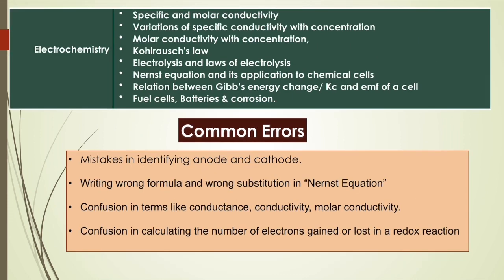In the second chapter, Electrochemistry, these are the important areas. We give more importance to the Nernst equation, numericals of the Nernst equation, Kohlrausch's law, and the relation between Gibbs energy change, equilibrium constant, and EMF. Those areas need to be given due importance.